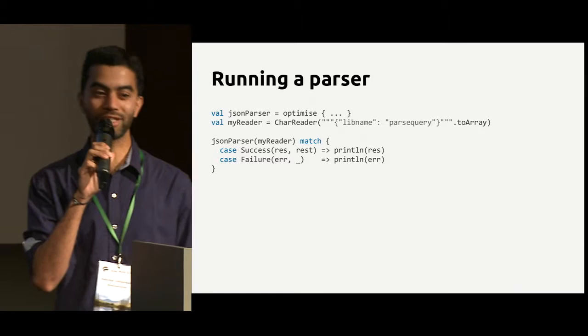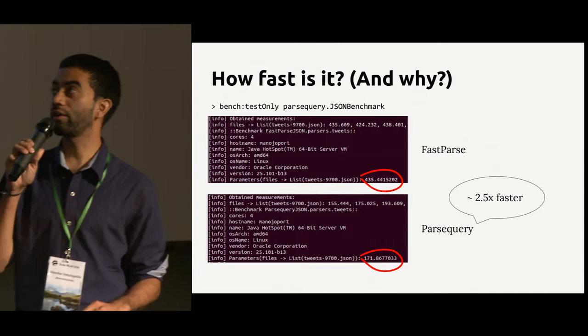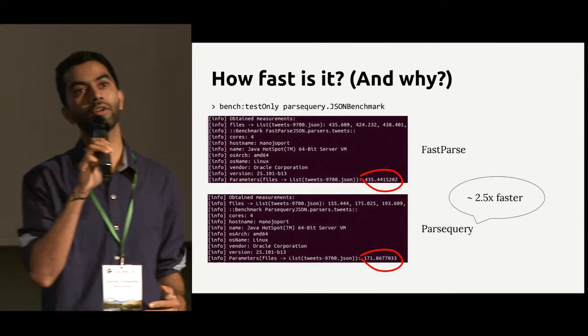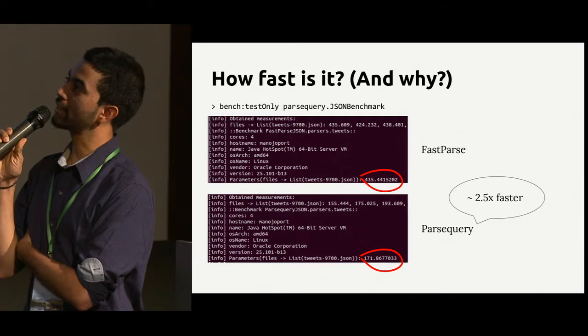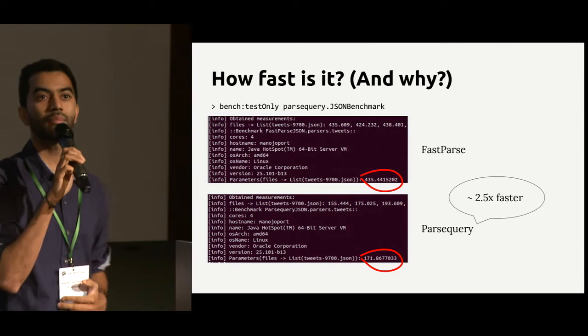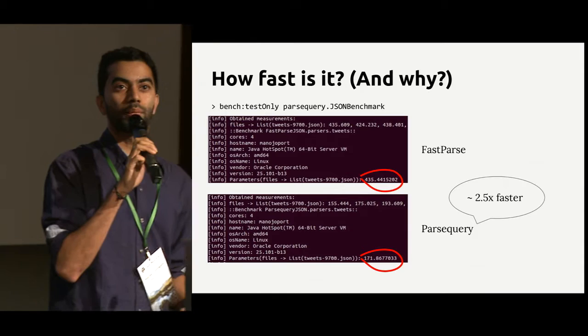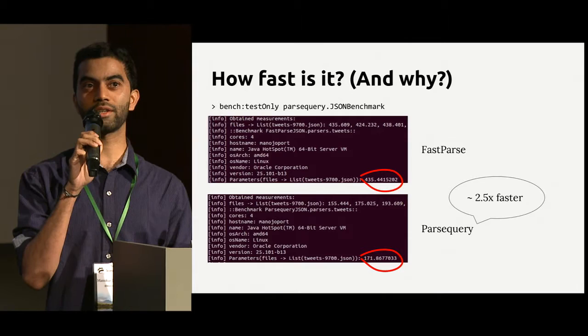How fast is it? Once you check out the repo, you can try running the benchmarks yourselves. On the JSON parser benchmark with tweets 9700 — a 10-meg tweet file — we're about 2.5 times faster. But more than how fast, the interesting question really is why is it faster, or why is it fast at all?